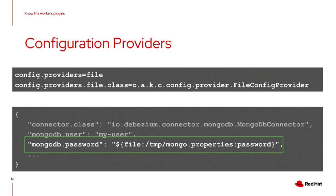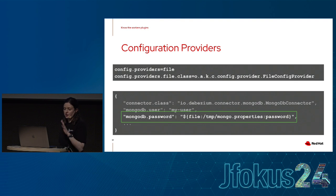There are built-in configuration providers: the file config provider, a directory config provider, and an EnVar config provider. The way it works is you specify an alias for your config provider in the runtime configuration and specify the class, then in your connector configuration you use a dollar sign with braces and the alias, colon, and information specified by the config provider — for file, you specify the file name and a key within that file.